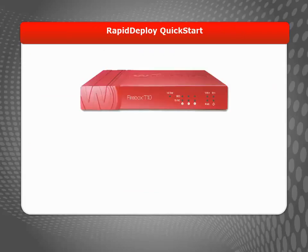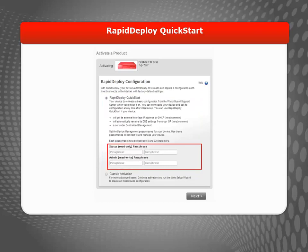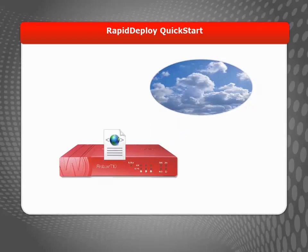Finally, you can use the Rapid Deploy Quick Start method. This is an option for Firebox T10 devices only. When you activate a Firebox T10 device on the WatchGuard website, you can select Rapid Deploy Quick Start and set the device management passphrases for your device. WatchGuard automatically creates a configuration file for you. When you connect the Firebox T10 device to the internet and power it on, the device automatically requests the configuration file from WatchGuard and sets the device management passphrases to the ones you've specified.